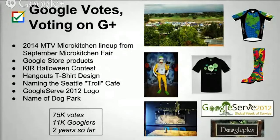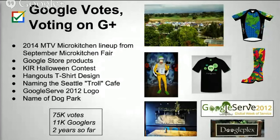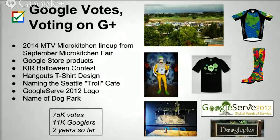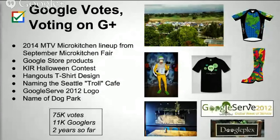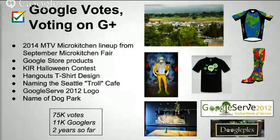Google Votes is a liquid democracy voting platform on Google+. This is an internal tool which we've been running votes on for about two years. At this point, 11,000 Googlers have voted using Google Votes and cast about 75,000 votes. Our biggest event has been the micro kitchen fair, where about 8,000 Googlers showed up and 4,600 voted, including people who saw the posts on Google+. The entire 2014 micro kitchen lineup is based on that vote.